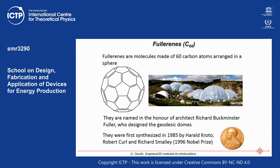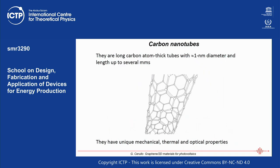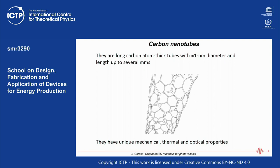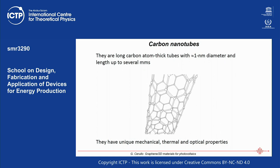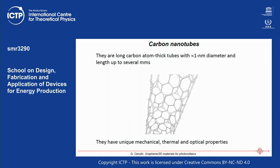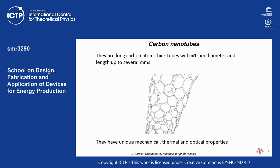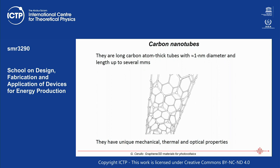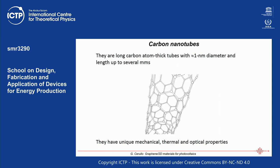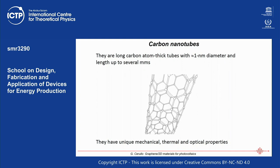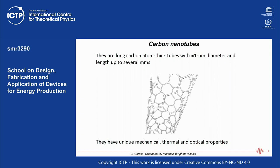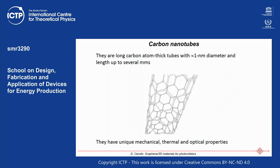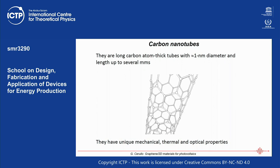Carbon nanotubes are a piece of graphene wrapped around itself to form tubes with different diameters, typically around one nanometer, and can be as long as millimeters. They were discovered well before graphene and have also been investigated for their unique mechanical, thermal, and optical properties.